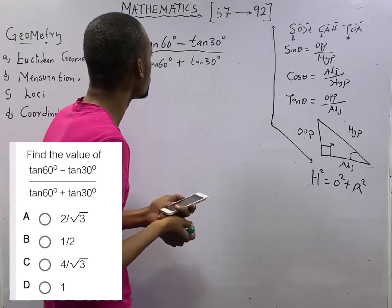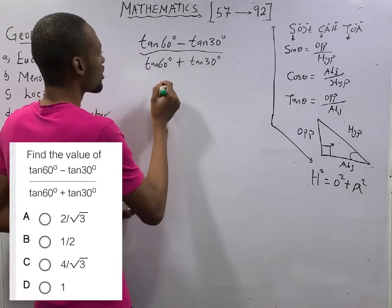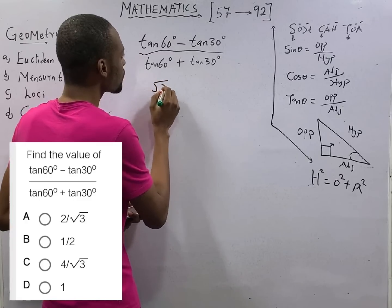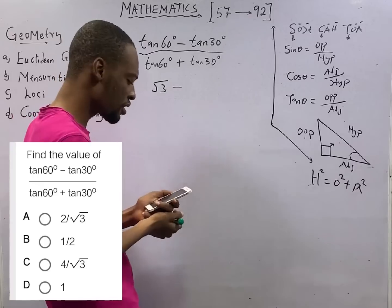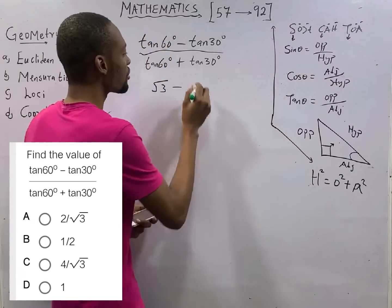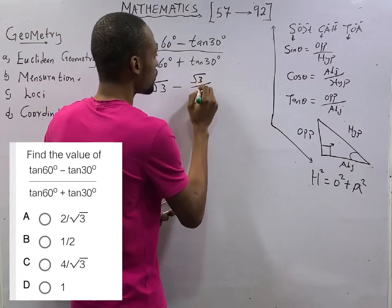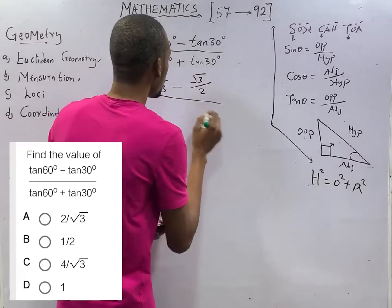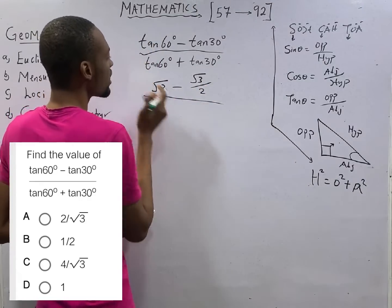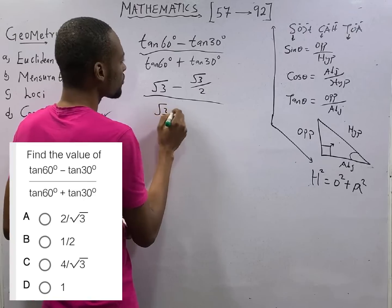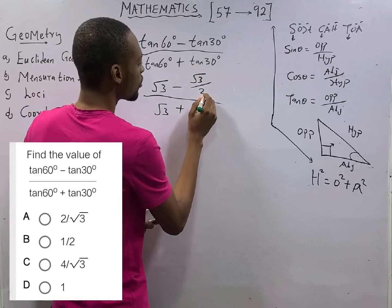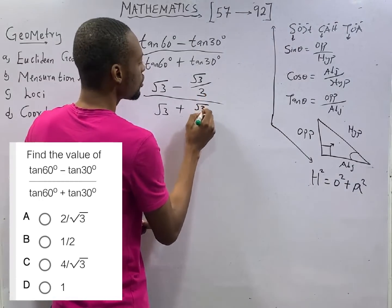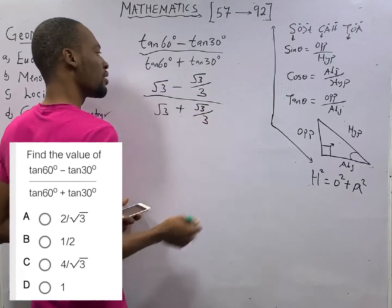This should not give you a problem because we know that tan of 60 degrees is root 3, tan of 30 degrees, that is root 3 over 3. So here is root 3 over 3 divided by, tan 60 again, plus tan 30 again, root 3 over 3.